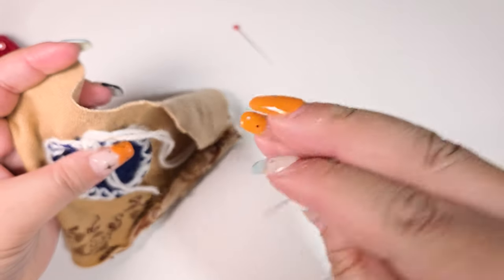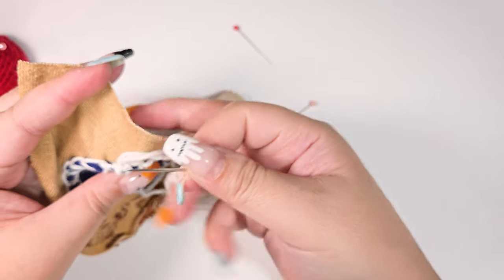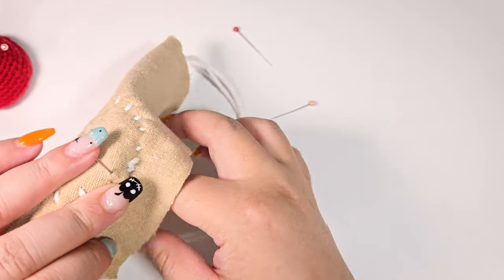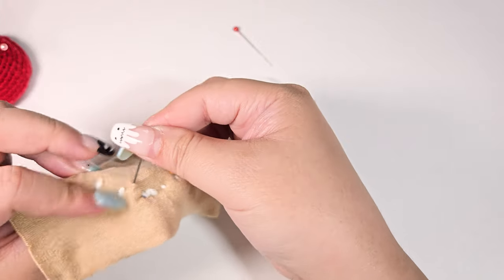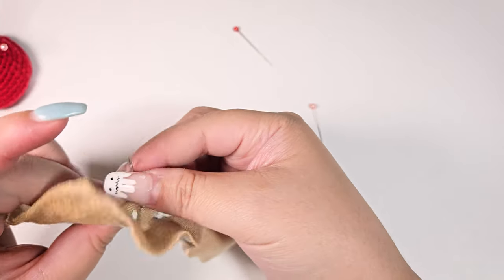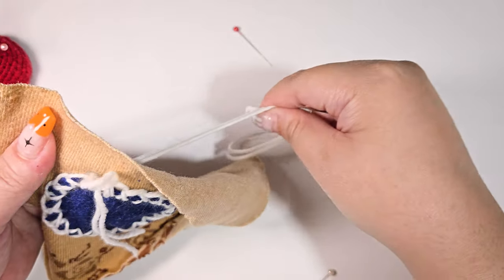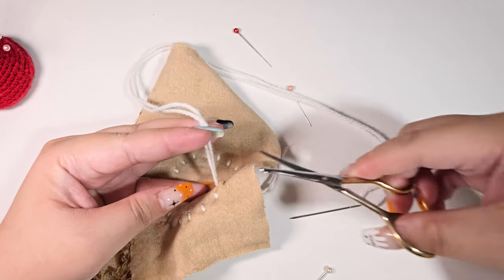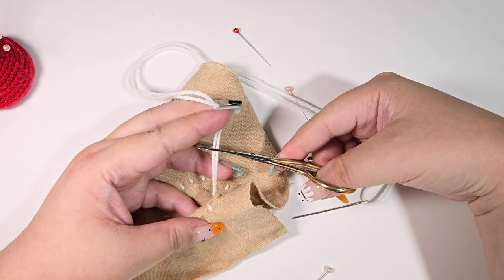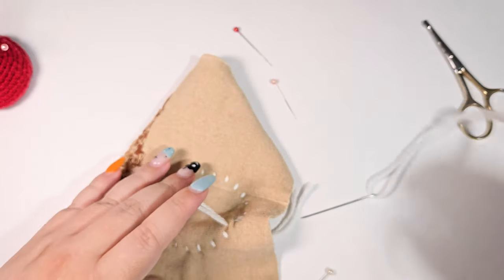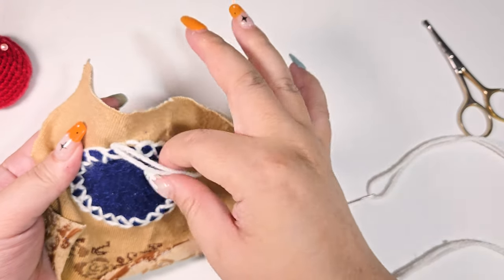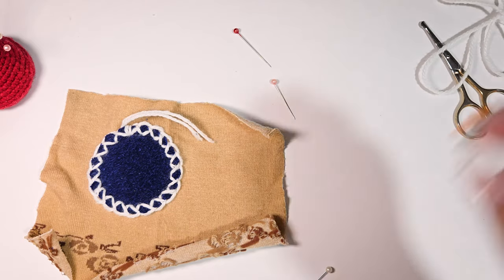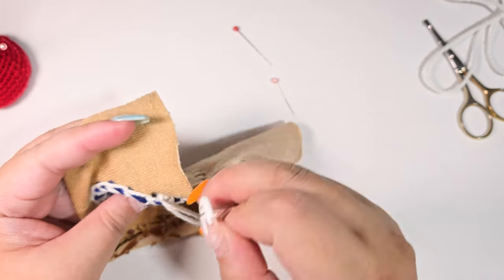Insert the needle under and exit at the back. Cut. To hide the beginning threads, repeat the same: insert the needle under and exit it at the back.